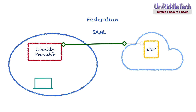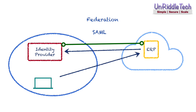First, configure the third-party application in the cloud to trust your identity provider using SAML. When the user tries to access the application using their browser, it may be redirected to your identity provider requesting authentication. The identity provider prompts the user to type their credentials. You may configure the identity provider to use multi-factor authentication to improve security. A SAML assertion will be returned after successful authentication.